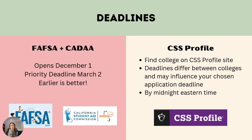Each of the applications we discussed will have specific deadlines. The FAFSA and CADA open December 1st, and students are encouraged to complete the application as early as possible. March 2nd is the priority deadline for students to be eligible for Cal Grants, which are grants funded by the state of California. The CSS Profile deadline will differ for every college requiring it, so students should review this information on individual college websites. Often the CSS Profile is due at the same time as a school's application deadline.